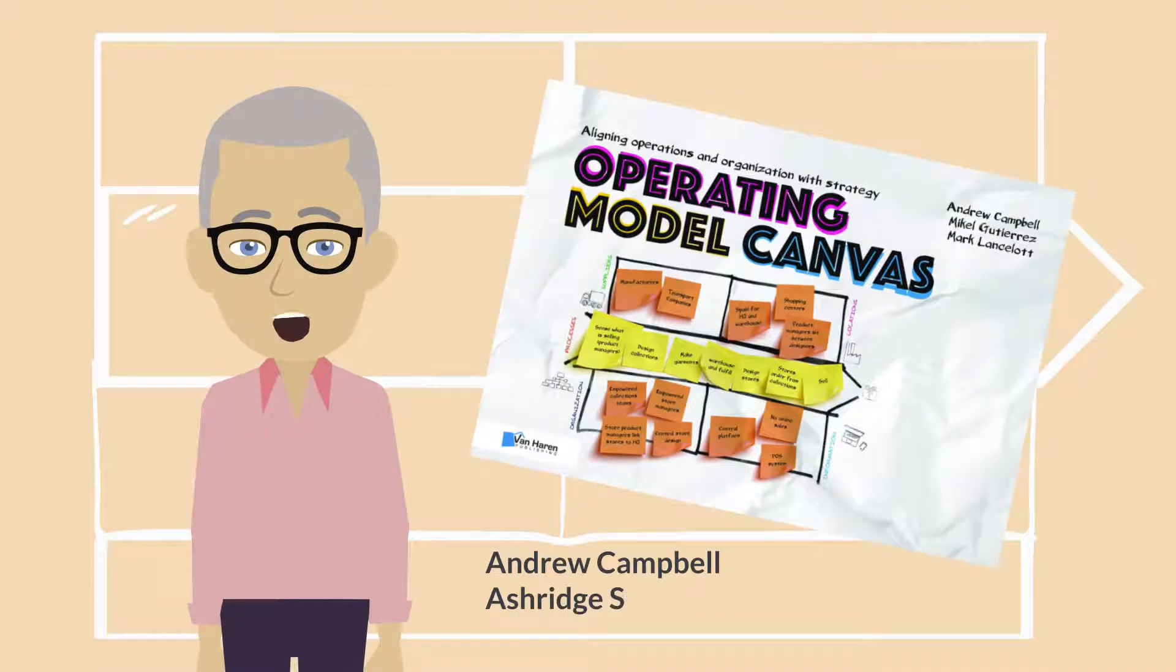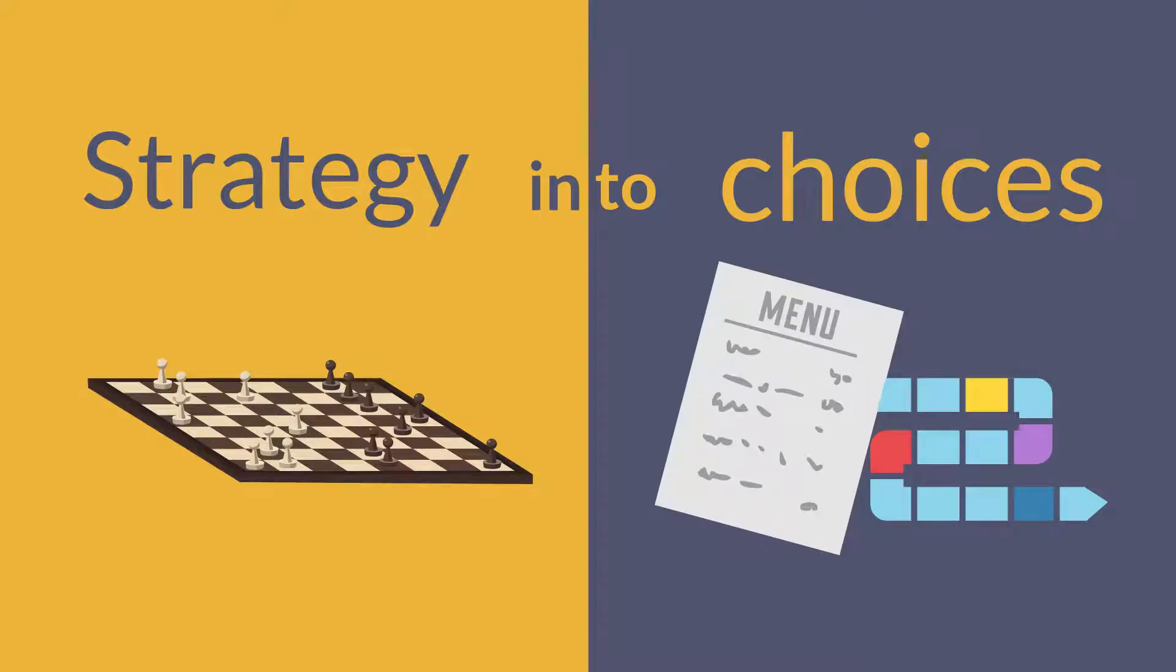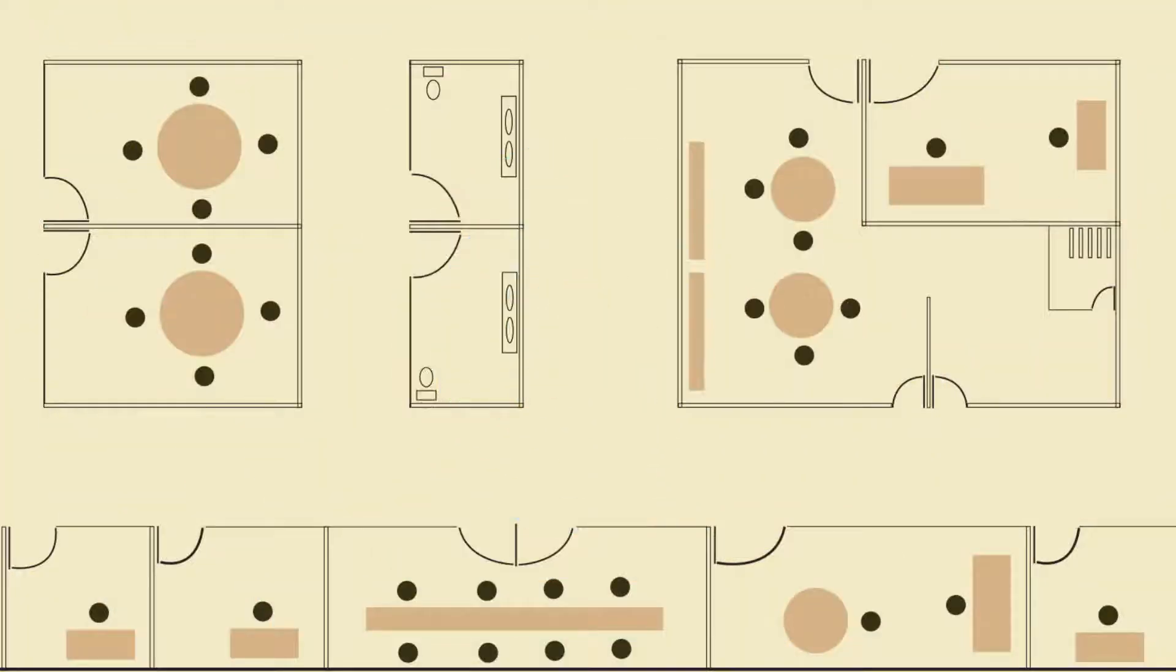The operating model canvas was developed by Andrew Campbell and others as a visual tool for converting strategy into operational choices. The tool can be used at a high level to map the entire organization or at a low level to map a function within the organization.